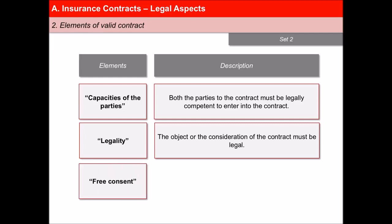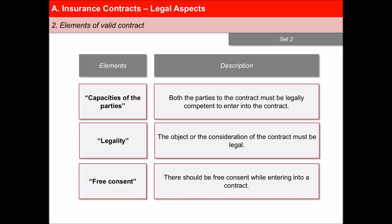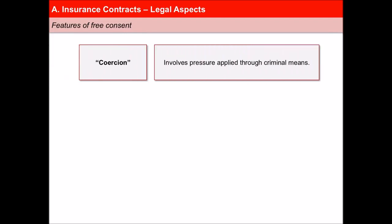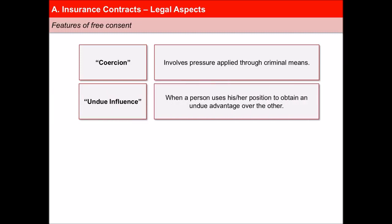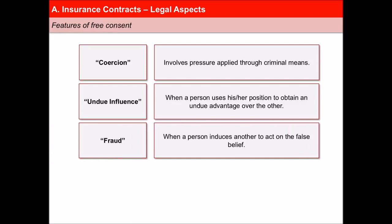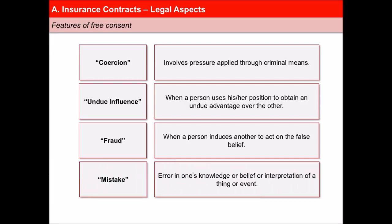Free Consent: There should be free consent while entering into a contract, otherwise it is a void contract. Consent is said to be free when it is not caused by: Coercion, which is pressure applied through criminal means; Undue Influence, which is when a person is able to dominate the will of another and uses their position to obtain an undue advantage over the other; Fraud, which is the deliberate concealment or misrepresentation of facts; and Mistake or Error, which is one's knowledge, belief, or interpretation of a thing or event. Thank you.